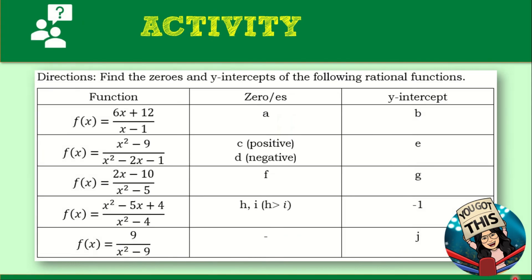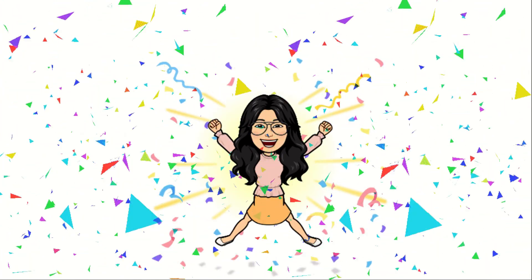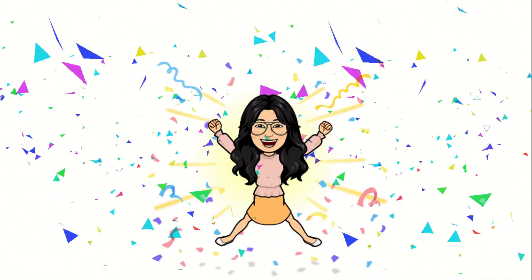At this point, let's have activity time. I prepared an assessment for you to check your understanding of this lesson. Find the zeros and the y-intercepts of the given rational functions. Fill in the table: the first column has the given function, the second has the zeros, and the last column has the y-intercepts. You can pause this video or take a screenshot and answer during your available time. That ends our lesson on the zeros and y-intercepts of rational functions. Great job for today, and see you in the next lesson.